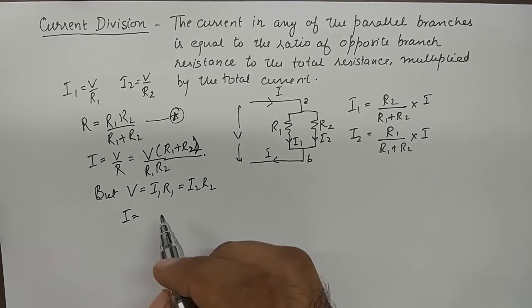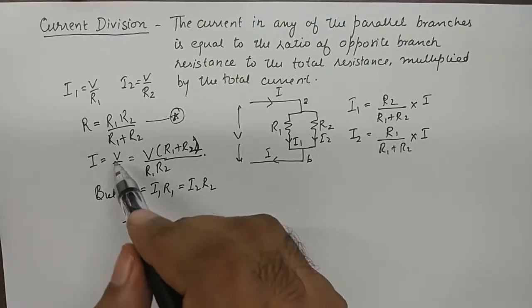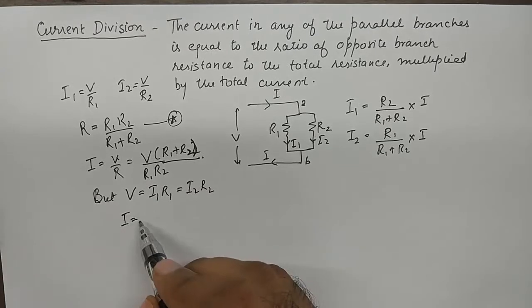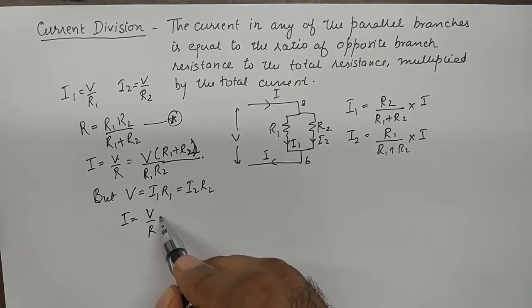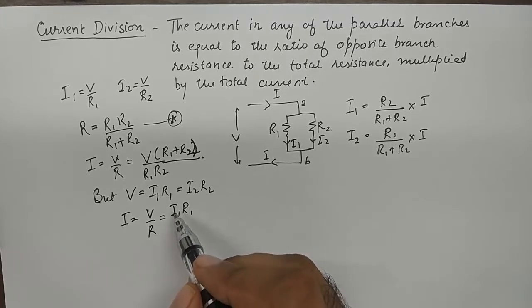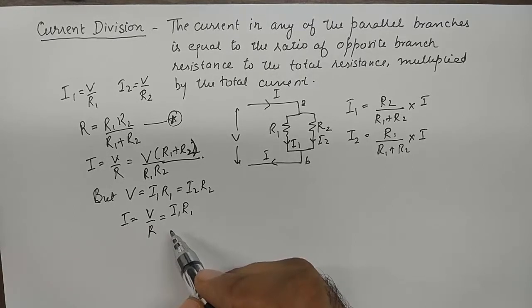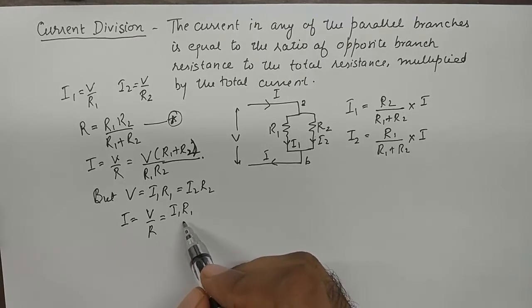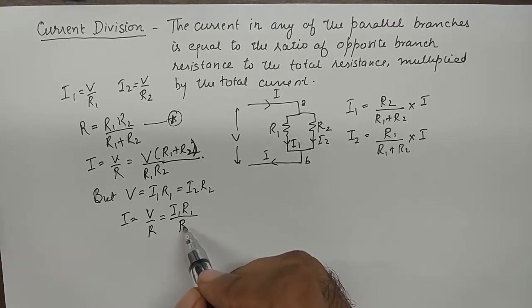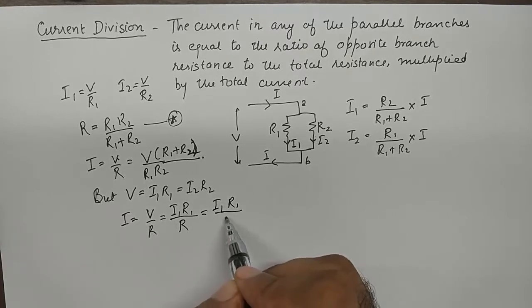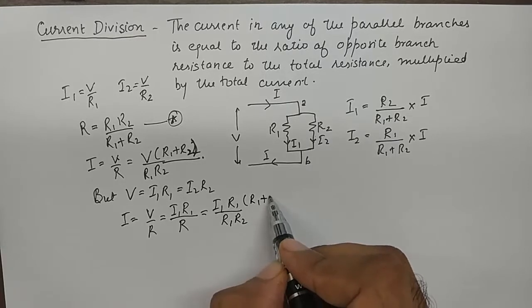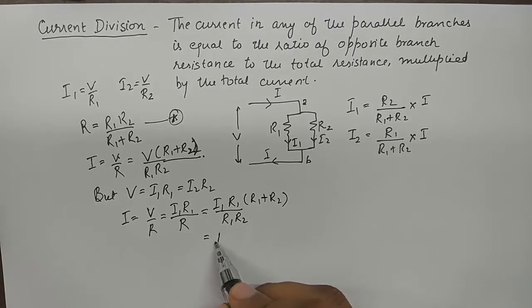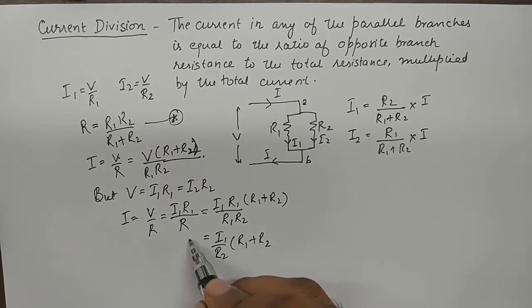So I can also be represented as V by R. I will substitute V as I1 R1. Now the denominator is R, and in place of R I will substitute the R in terms of R1 and R2. So this is what I finally get, and this becomes I.